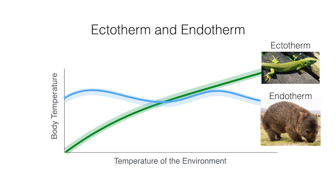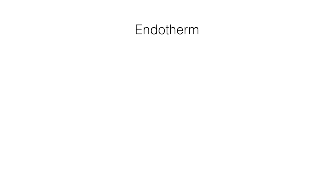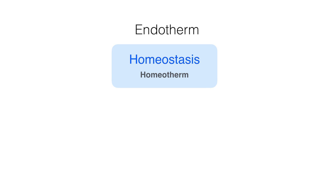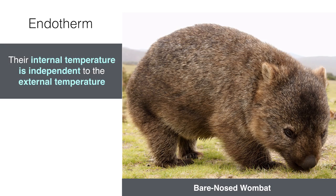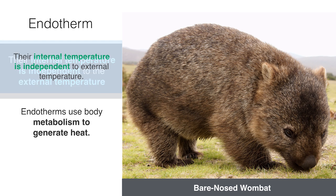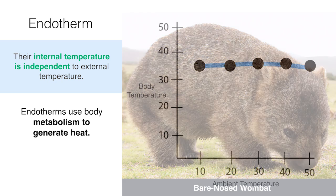When we compare an ectotherm to an endotherm, the differences are pretty clear. An endotherm's body temperature stays relatively constant, while an ectotherm's changes depending on the temperature of the environment. So, unlike that wombat, a gecko would struggle if you dropped it in sunny outback Australia or in a freezer. How does an endotherm maintain a relatively constant internal environment? Through homeostasis. An organism that undergoes homeostasis is also known as a homeotherm. A homeotherm maintains homeostasis through physiological and behavioural responses towards changes in the external environment. It is important to understand that an endotherm's internal temperature is independent of external temperature. Endotherms use body metabolism to generate heat.